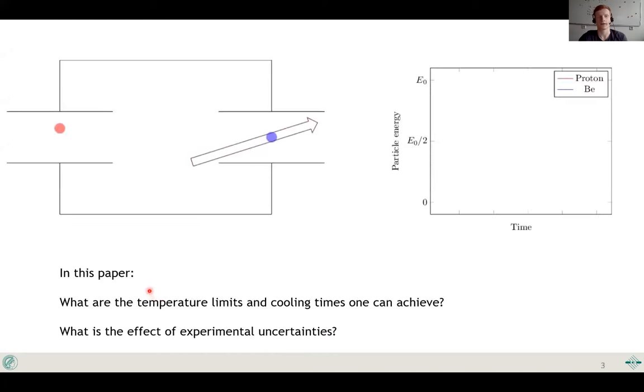In general, we find that a pulsed laser scheme is the most beneficial, as I will now demonstrate with this animation. So assume we have the hot proton in one trap and a cloud of laser-cooled beryllium ions in the other trap.